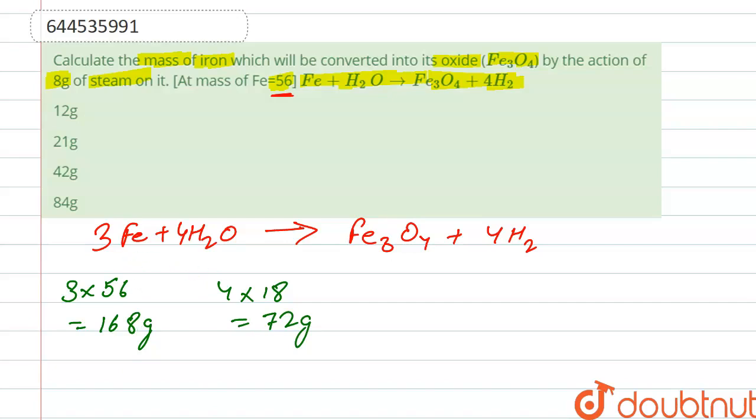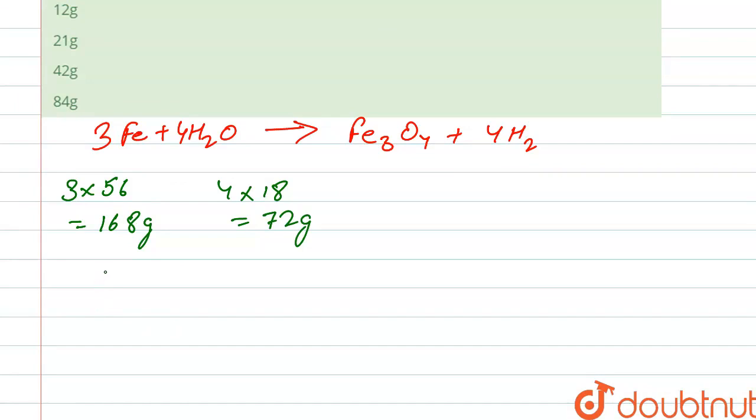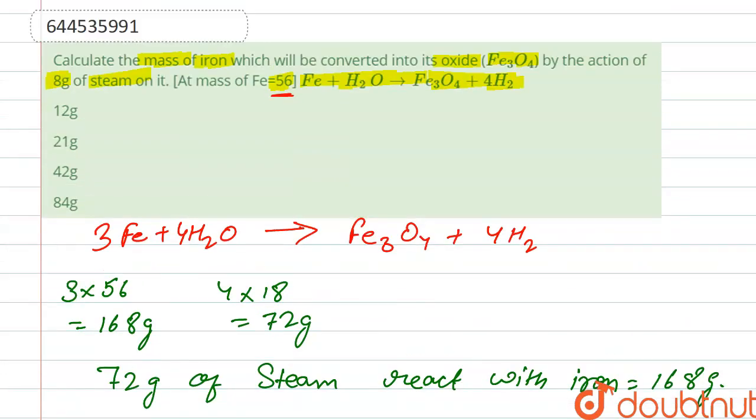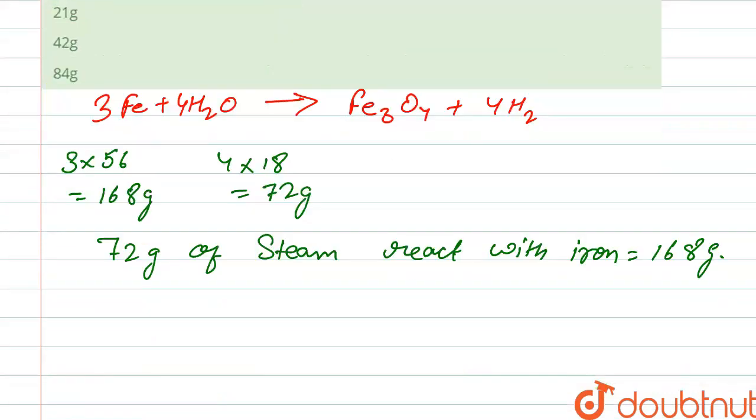So what we see: 72 grams of steam react with 168 grams of iron. So we write that 72 grams of steam react with iron, which is 168 grams. So we have to find out for 8 grams of steam.